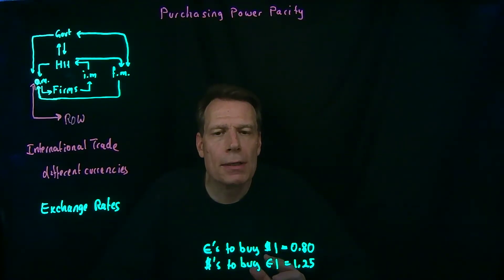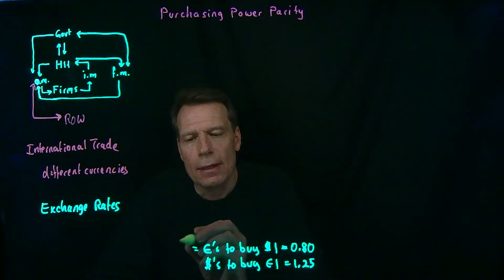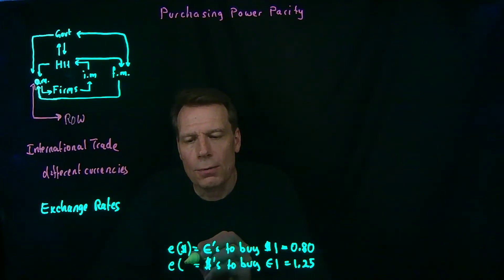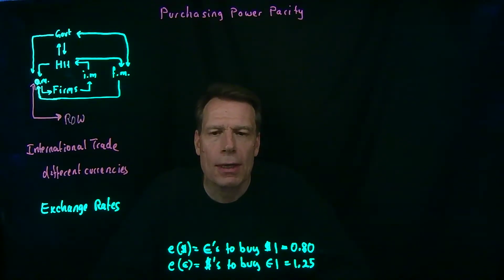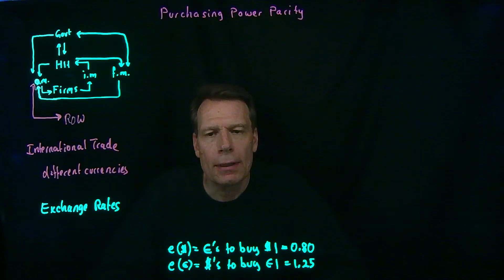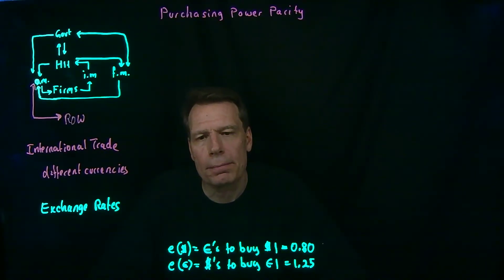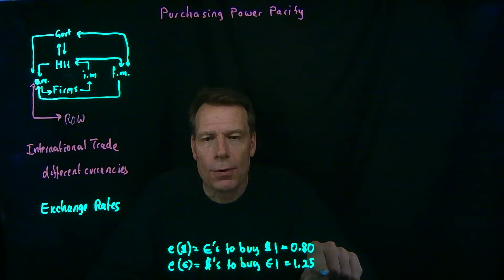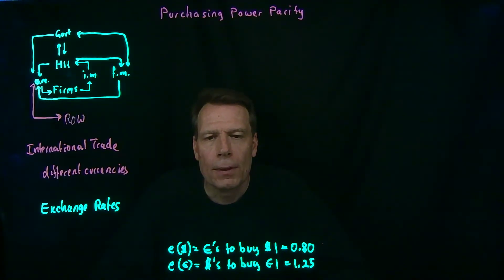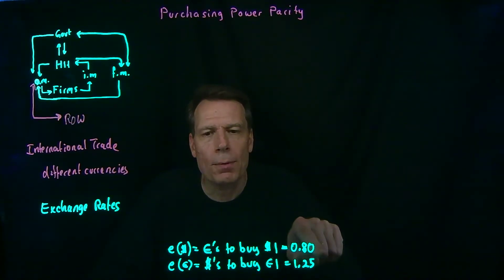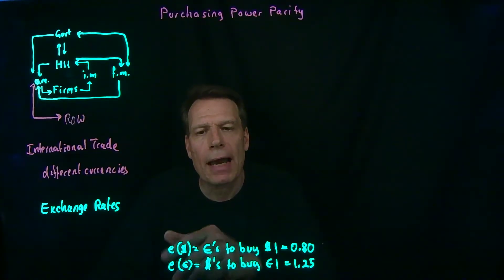We'll adopt the convention of calling the first expression — euros per dollar — the exchange rate of the dollar, and the second — dollars per euro — the exchange rate of the euro. This naturally flows into how we talk about appreciation and depreciation. If the dollar appreciates and becomes more valuable, it takes more euros to buy a dollar, so the exchange rate for the dollar goes up, and the exchange rate for the euro falls. Conversely, if the euro appreciates, it takes more dollars to buy a euro, so the exchange rate for the euro goes up.